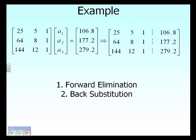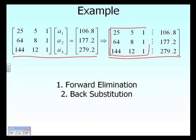We are going to write down these three equations, three unknowns in matrix form. We write the augmented matrix, which basically means that we write down the coefficient matrix and the right-hand side vector. This makes the presentation clearer and avoids confusion during the forward elimination steps.